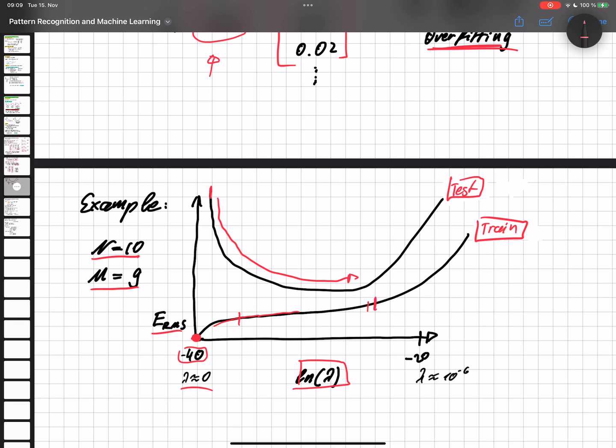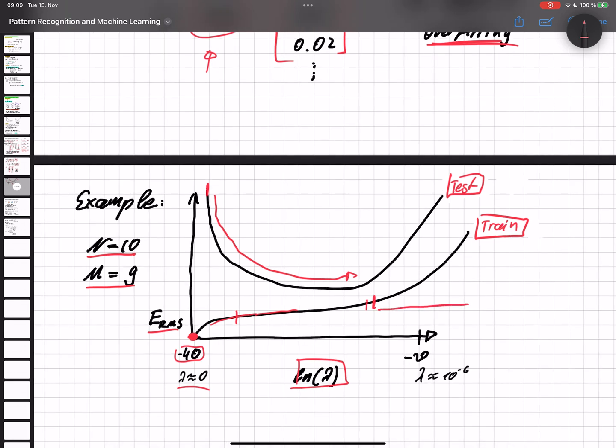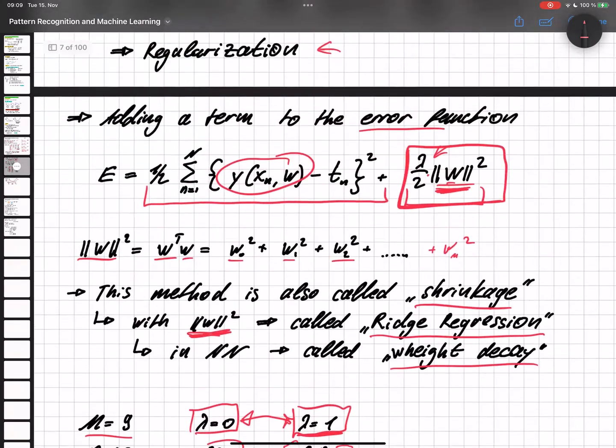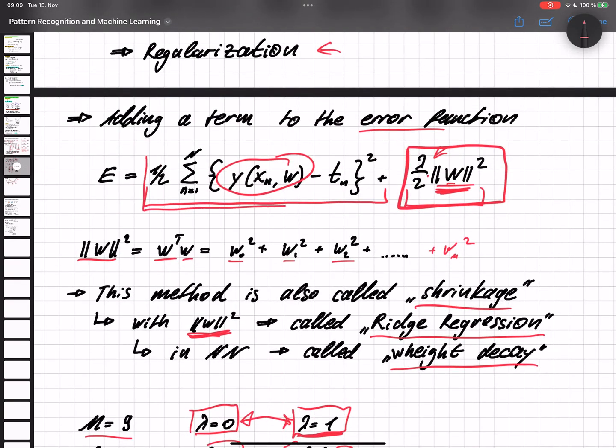At a certain point, we start to increase the training error and increase the test error. Why is that? Because at a certain point, if lambda is getting too big, we only try to reduce this one. So this basically just falls away, and we do not care about the distance anymore. And the only thing that we're trying to do is only minimize the values of the actual vector.